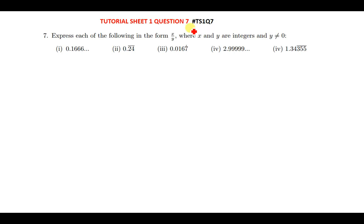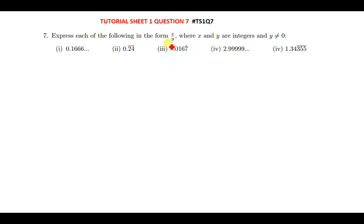The question says: express each of the following in the form x over y, where x and y are integers and y is not equal to zero. This statement is essentially the definition of rational numbers — it's telling us that these decimal numbers, despite appearing as decimals, are rational numbers. Only a rational number can be expressed in this form. So in other words, they could also ask you to show that a given number is a rational number.